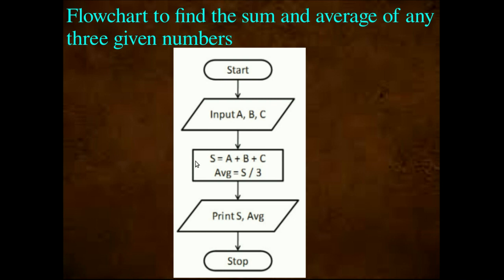The next step is the process, represented by a rectangular box: S equal to A plus B plus C, and Average equal to S divided by 3. Then we continue to the output step: Print S, Average — using the rhombus symbol again for output. Last is Stop — the terminal symbol. This is the flowchart showing the step-by-step pictorial representation.